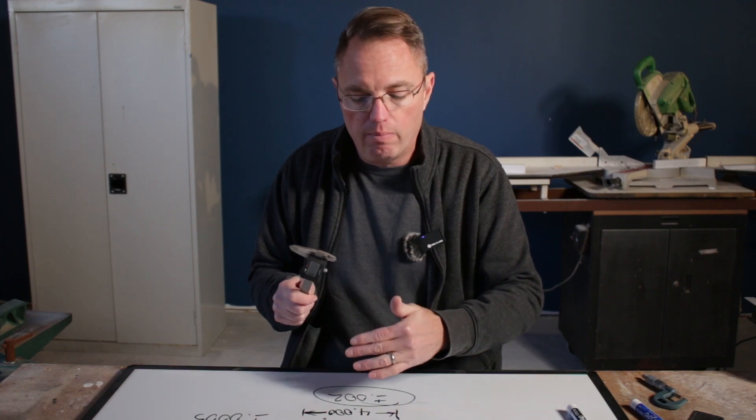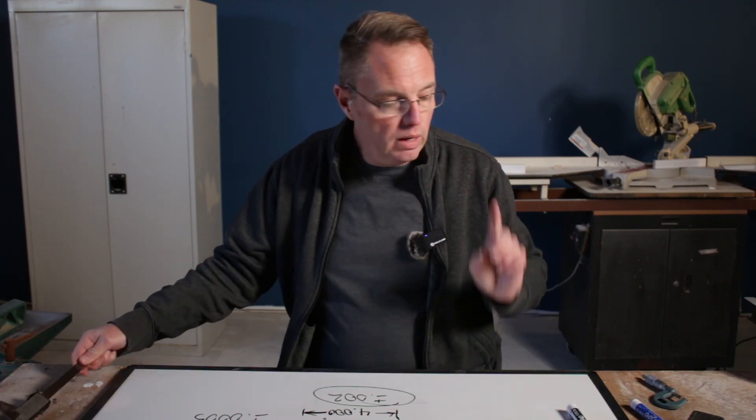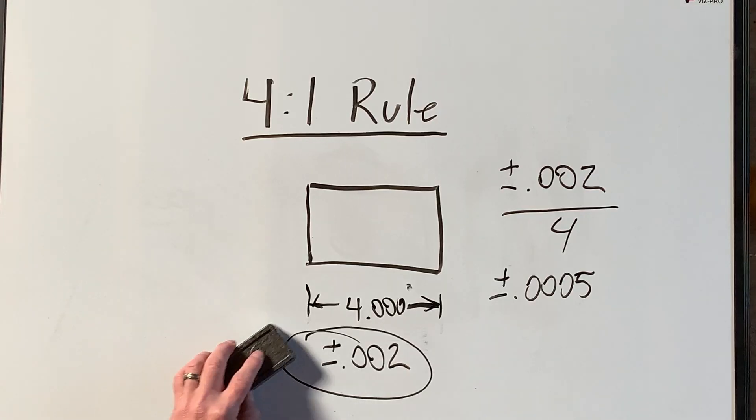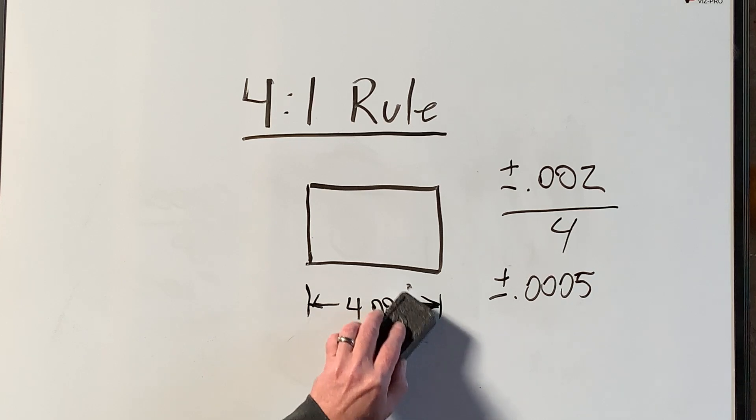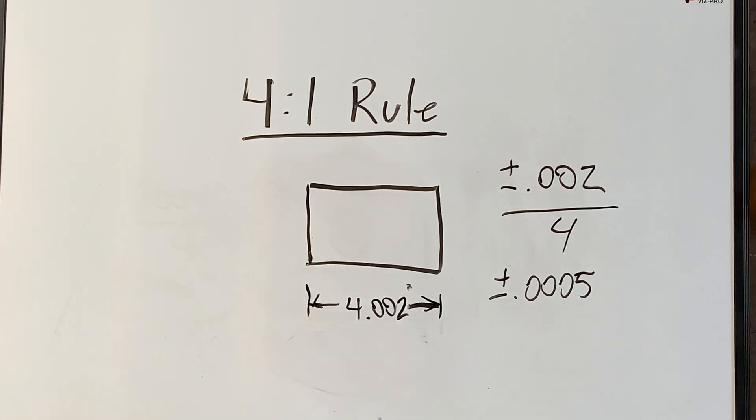So that's the four to one rule. There is one other thing to note. Often measurements will be high and low, so in this case a high of four inches and two thousandths...